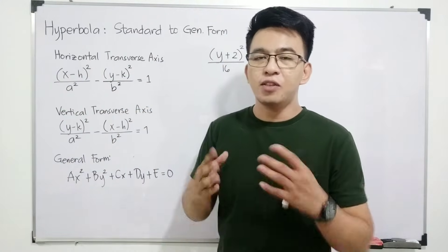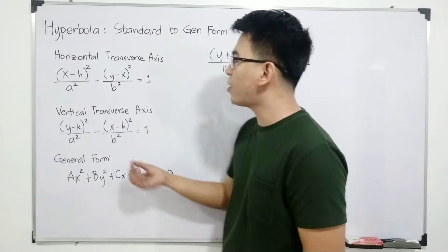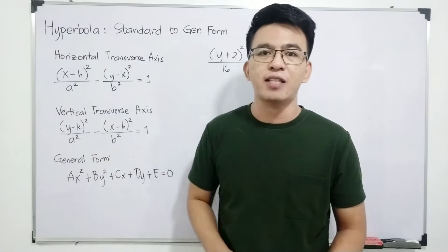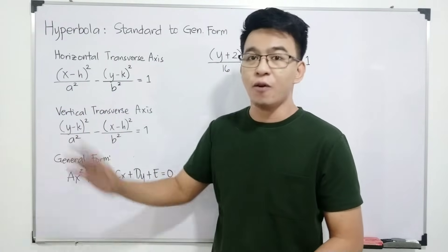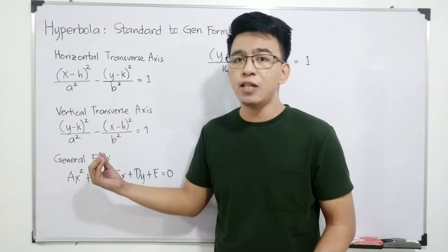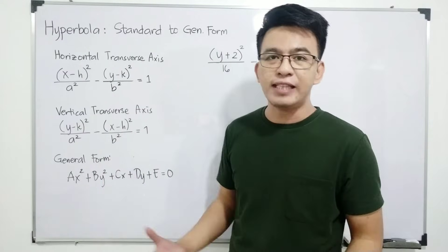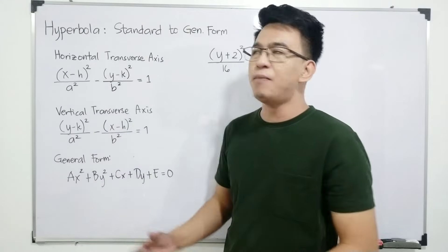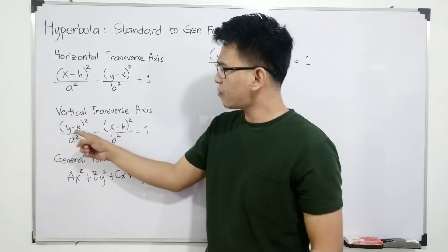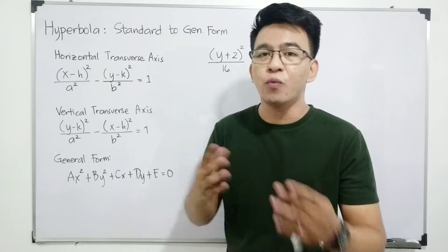Remember that a squared is always at the denominator of the positive term, whether it is x or y. The second equation applies when your hyperbola's orientation is vertical, meaning the opening goes upwards and downwards. You can identify this once the y variable or y term is positive.